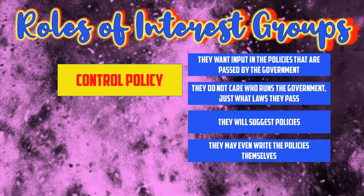Interest groups will suggest policy solutions to congressmen, presidents, local governments — and they may even write the policies themselves, writing the laws and giving them to a congressman to pass. They want to control what the policy is more than they want to control who enacts it. They do not care about who does it; they just care about what happens.